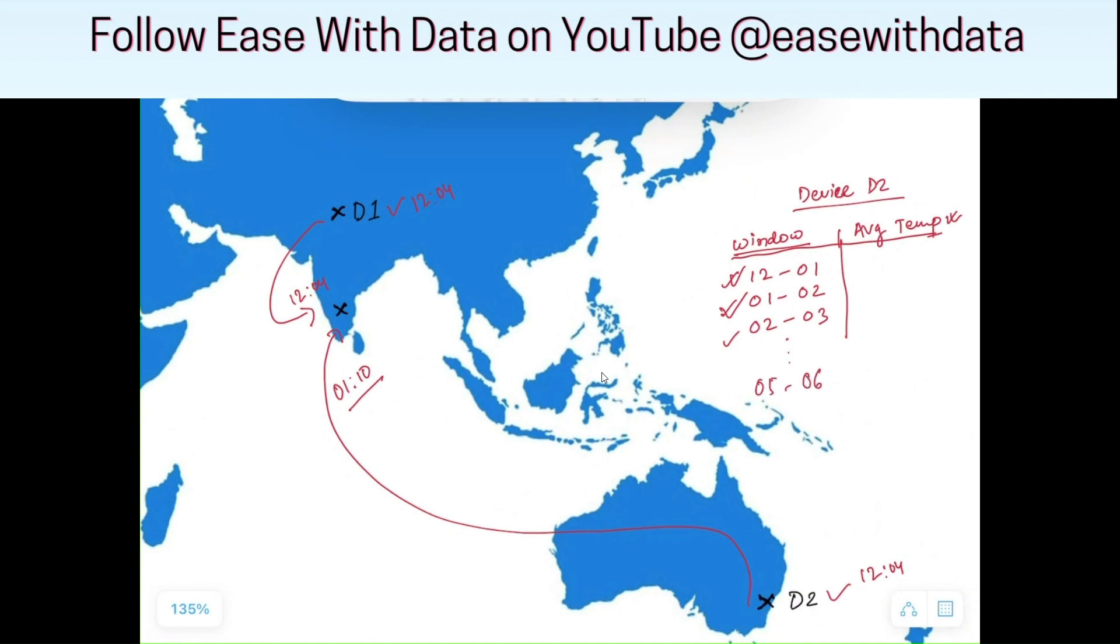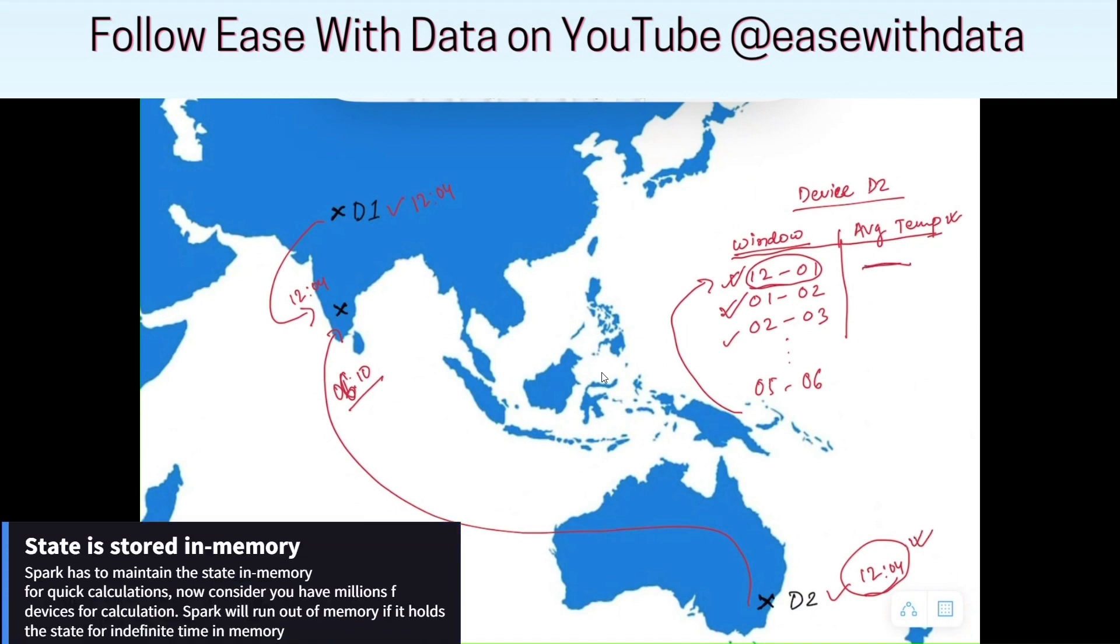But somehow, one of the events that was generated at 12:04 arrives late by 6 hours, say at 6 PM. Since we are doing this calculation based on event time, Spark has to go back and update the window of 12 to 01 because this event was generated at 12:04. So the average temperature for 12 to 01 will now be updated after 6 hours.